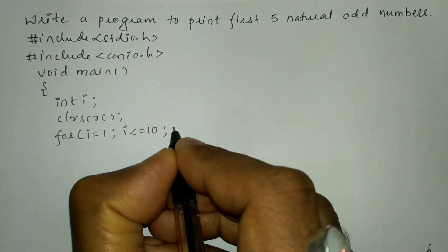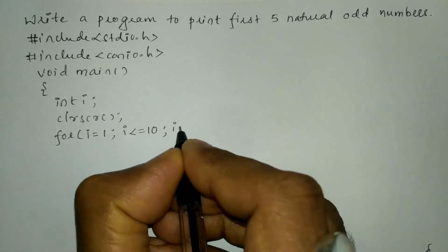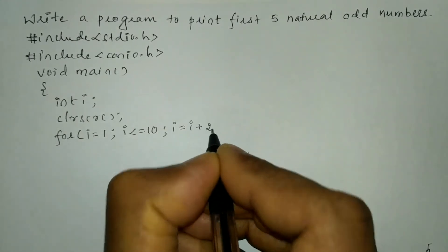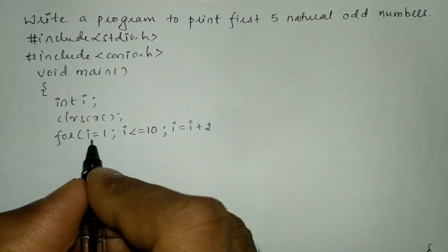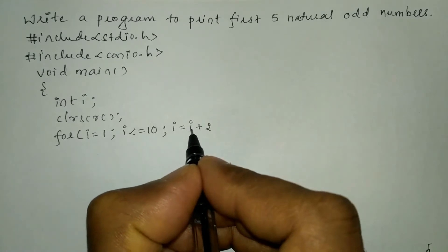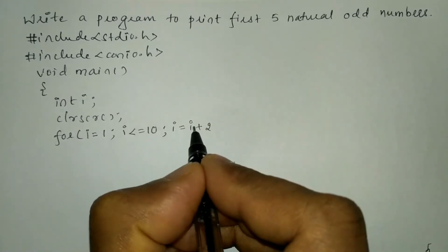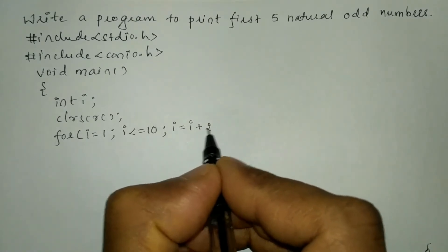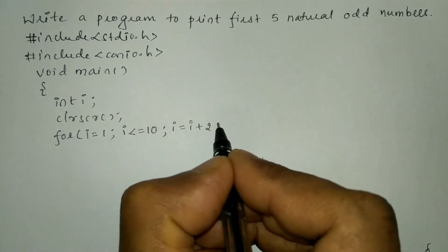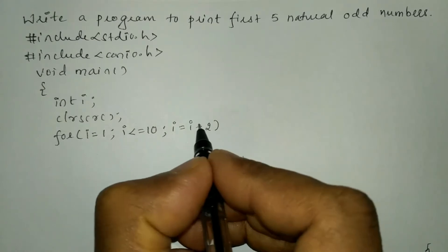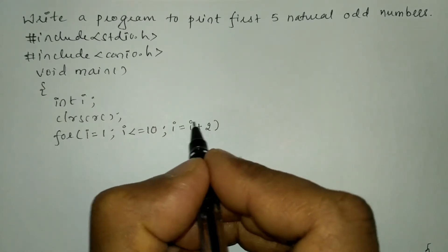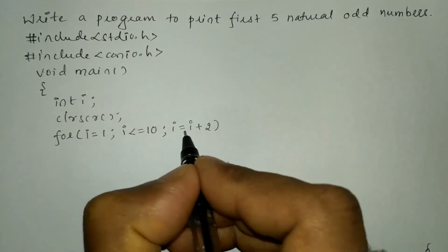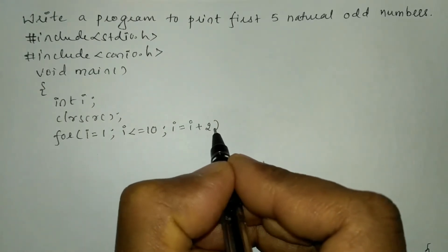Put a semicolon and here I'm going to write i is equal to i plus 2. For the first time i is 1, so after the second iteration 1 plus 2 will become 3, which is the next odd number. This is how I'm going to get the odd numbers — that's the reason I have written i is equal to i plus 2.